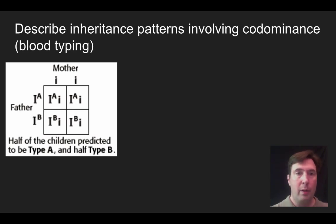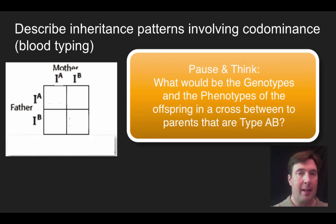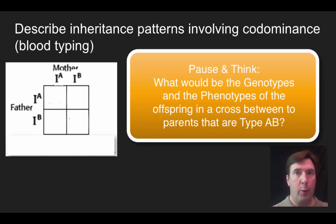Now I'm going to ask you to pause and think. What would happen if you had a cross between a mother who was type AB and a father that was type AB? Pause and think — tell me the genotypes and the phenotypes of the offspring in that cross.